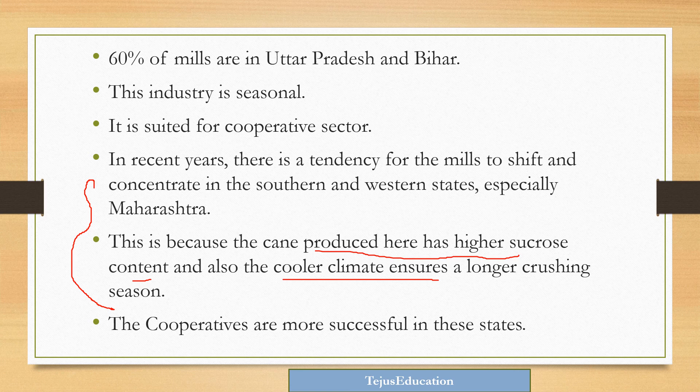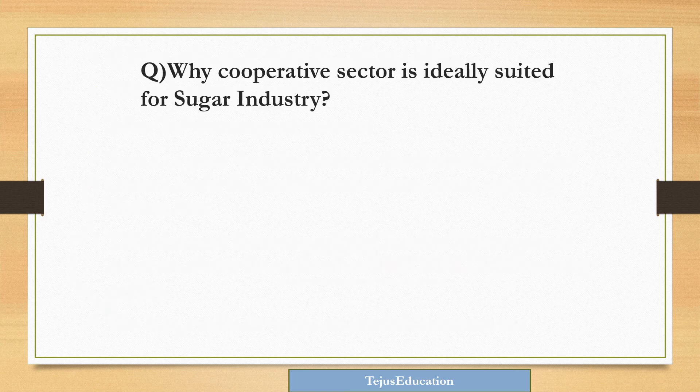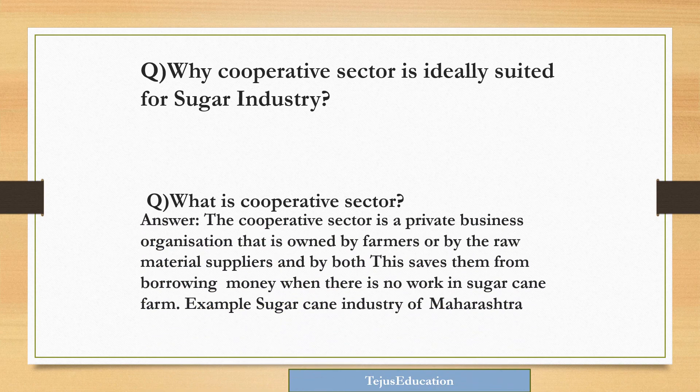Cooperatives are more successful in these states. The cooperative sector is a business organization run by sugarcane farmers and raw material suppliers — at times it is done individually and sometimes collectively. This saves farmers from financial hardship when there is no work on the sugarcane farm. A key example is the sugarcane industry of Maharashtra.